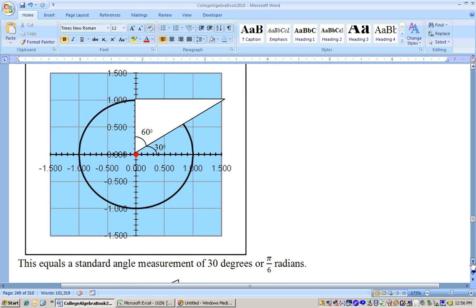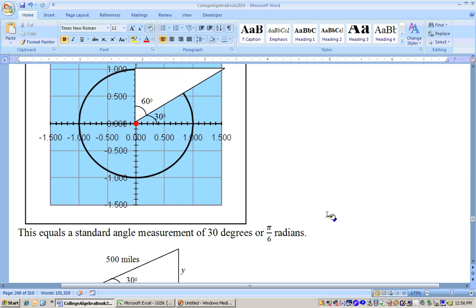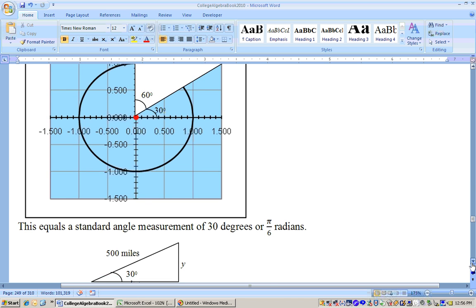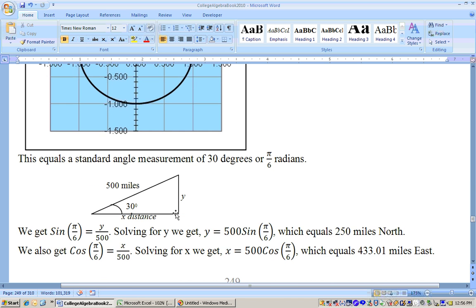Well, for us, that's a 30 degree measurement and it's going 500 miles. And now we can get its northern amount of distance that it covered by taking the sine of 30 degrees equals y over 500 or pi over 6 if you like radians. So, if the sine of pi over 6 or 30 degrees equals opposite over hypotenuse, y over 500, then y equals 500 times the sine of 30 degrees. And sine of 30 degrees is 0.5 and 0.5 times 500 is 250 miles north.